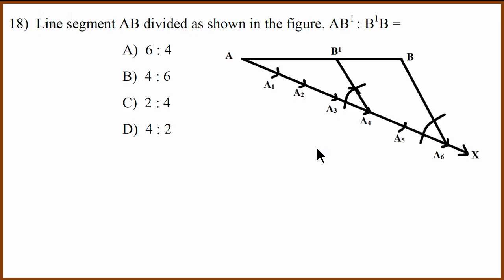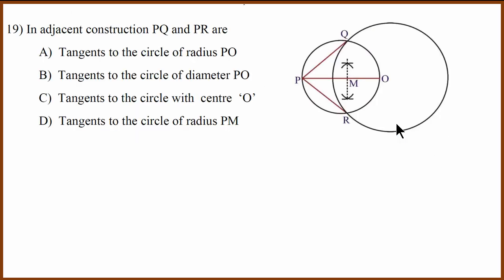18th question. Construction question. They have asked the ratio. The ratio is 4 is to 2. 1 point, 2 point, 3 point, 4 point. So 4 units. And this is 1 unit, 2 unit. So 4 is to 2. So here they have asked what are PQ and PR. Even though this is not to scale, PQ and PR are tangents to the circle with center O.